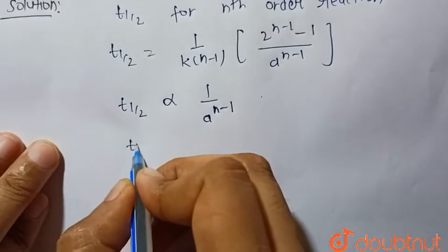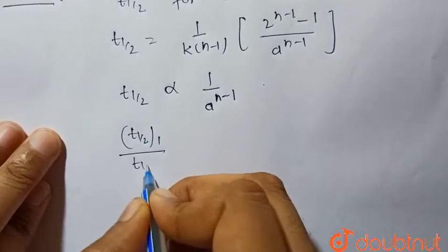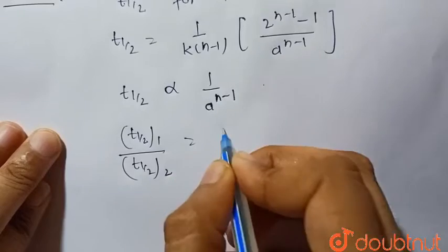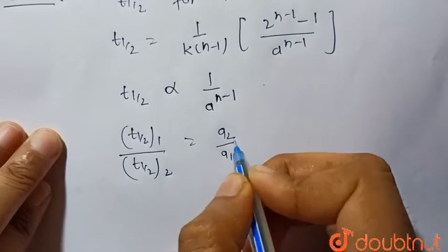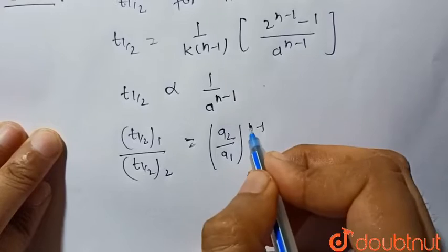So t_half_1 upon t_half_2 can be written as a_2 upon a_1 to the power (n-1), where n is the order of reaction.